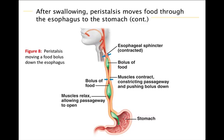The esophagus is a muscular tube that conveys food boluses from the pharynx to the stomach. The muscles at the very top of the esophagus are under voluntary control, so the act of swallowing begins voluntarily. But then involuntary waves of contraction by smooth muscles take over. Figure 8 shows how these waves of muscle contractions — peristalsis — squeeze a bolus toward the stomach.